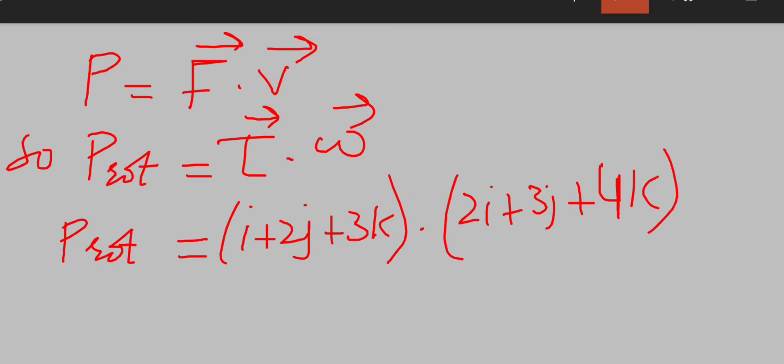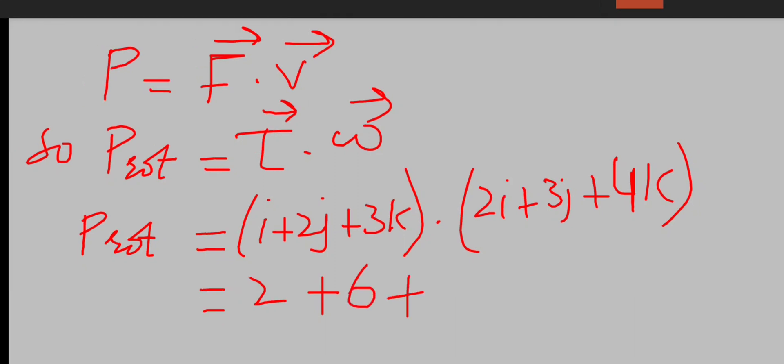So by simplifying this dot product, the value of i will be multiplied with i, the value of j is multiplied with j, and the value of k is multiplied with k. So i into 2i is equal to 2, plus 2j into 3j is equal to 6, plus 3k into 4k is equal to 12.